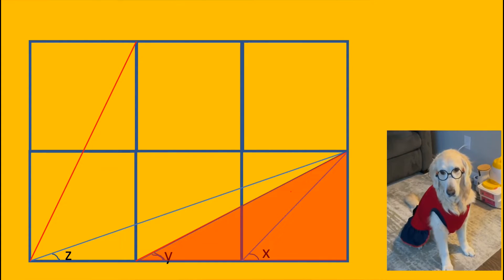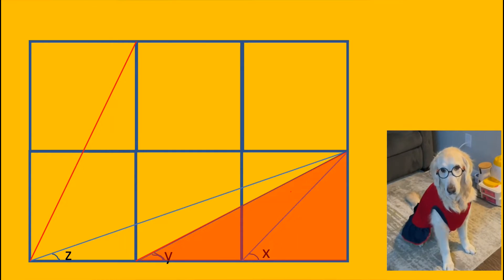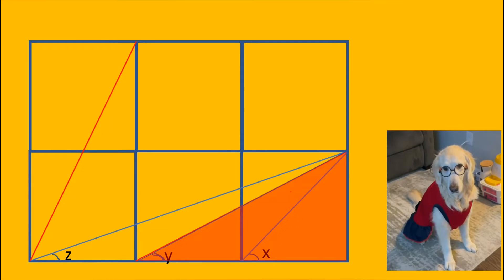When the hypotenuse and pair of corresponding sides of right triangles are congruent, the triangles are congruent. The red line is the hypotenuse of a triangle.